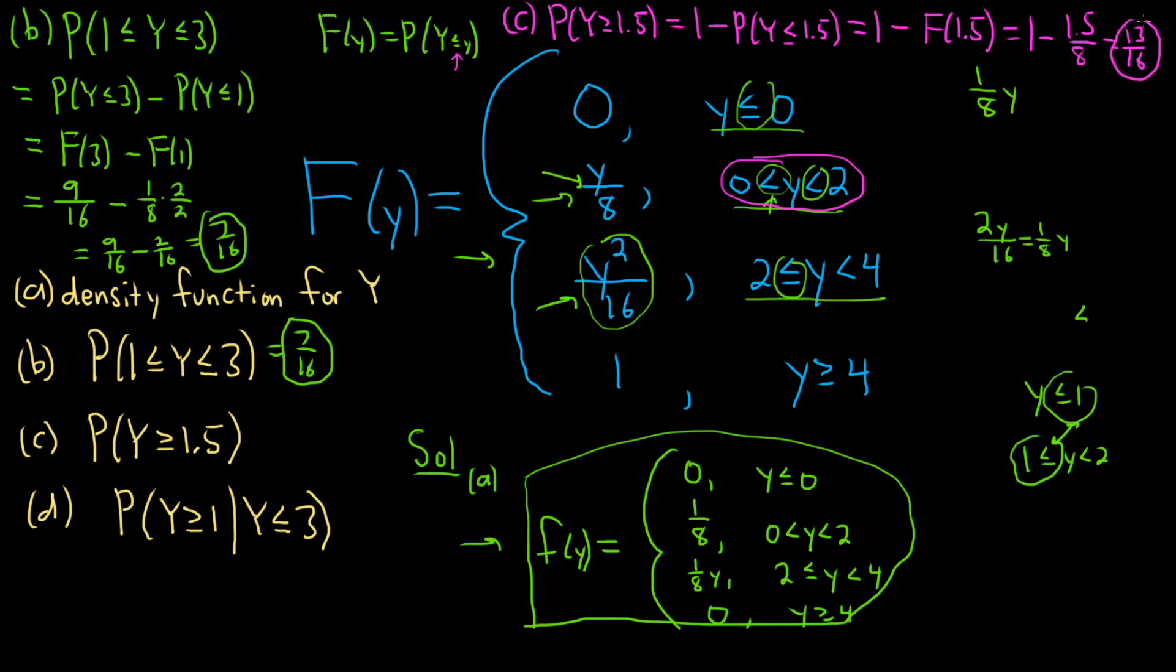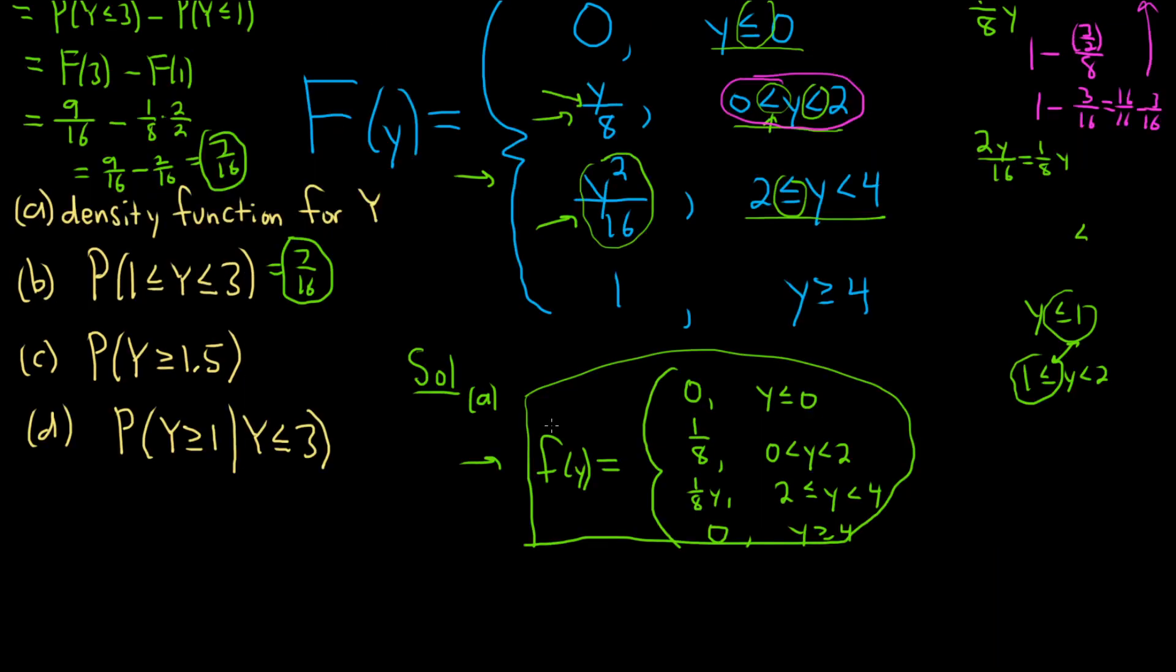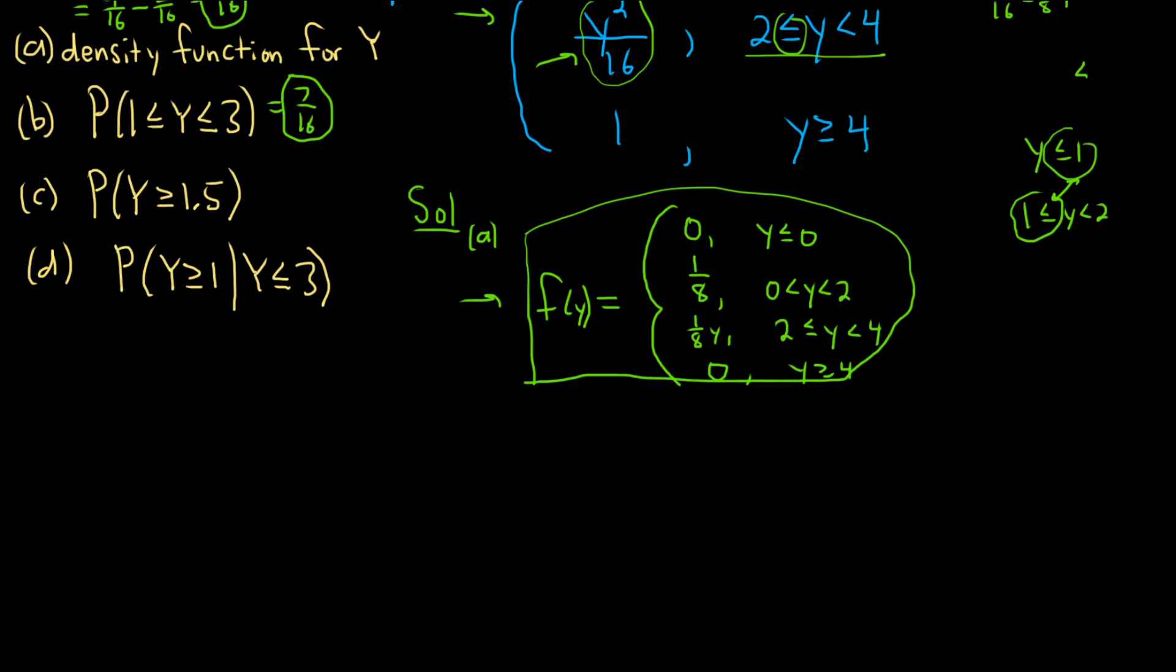To do it by hand, what you could do is you could write it as one minus three halves over eight, and that's one minus three sixteenths, and that's going to be sixteen sixteenths minus three sixteenths, which is thirteen sixteenths, so no issue there.